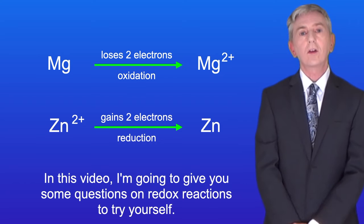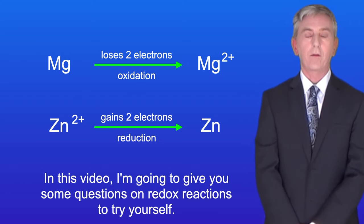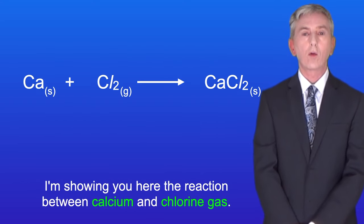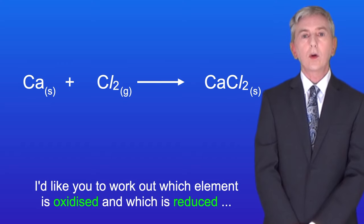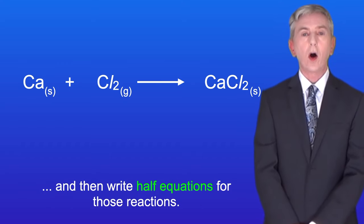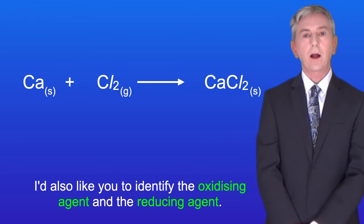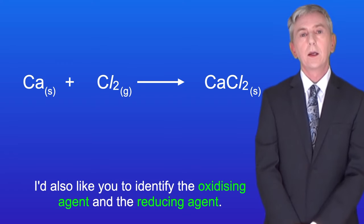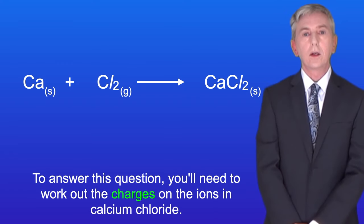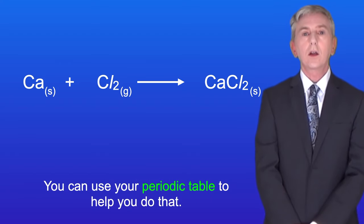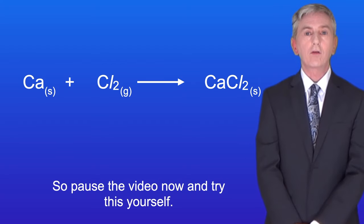In this video I'm going to give you some questions on redox reactions to try yourself. I'm showing you here the reaction between calcium and chlorine gas. I'd like you to work out which element is oxidized and which is reduced, and then write half equations for those reactions. I'd also like you to identify the oxidizing agent and the reducing agent. To answer this question you'll need to work out the charges on the ions in calcium chloride — you can use your periodic table to help. Pause the video now and try this yourself.